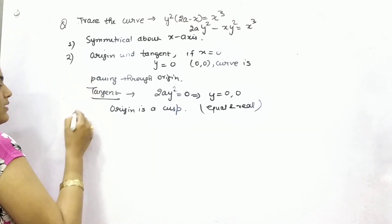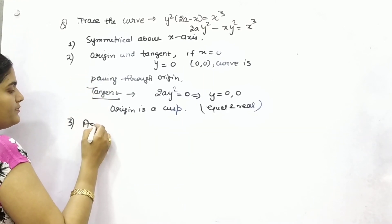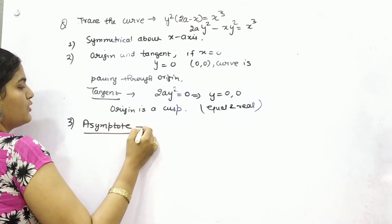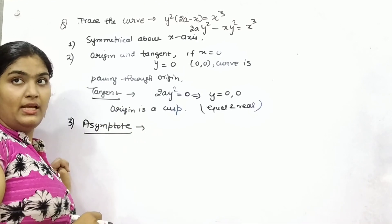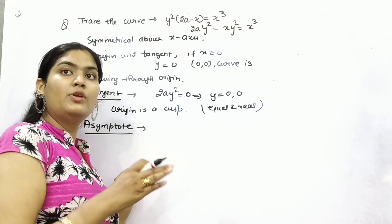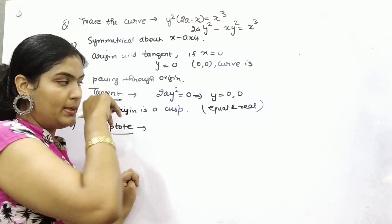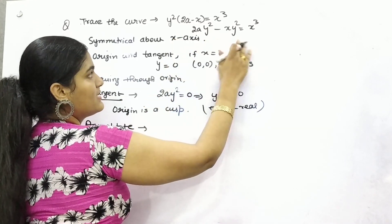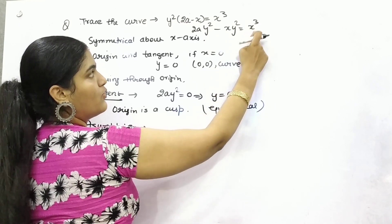Then after, asymptote. So for asymptote, you know that you need to find out the highest degree and its coefficient. Put its coefficient as 0 and you will get the value. So you can see here, highest degree.